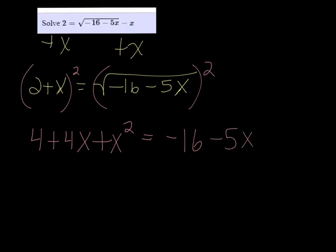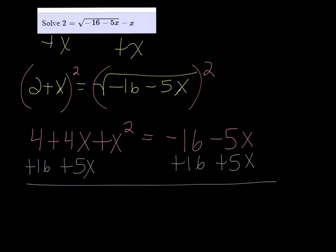Since we have a quadratic, we should set one side equal to 0, so I'm going to add 16 to both sides and add 5x to both sides. So I have 20 plus 9x plus x squared equals 0.